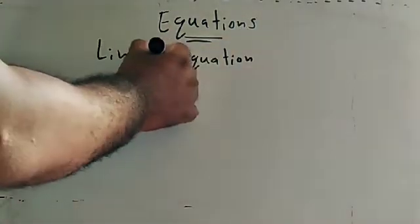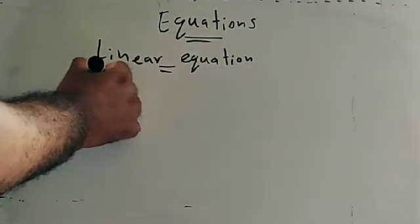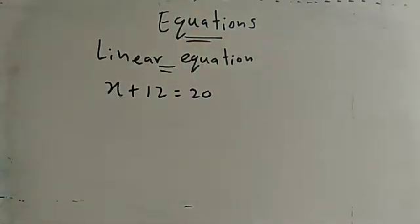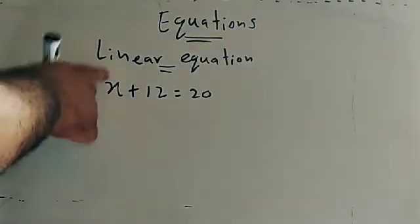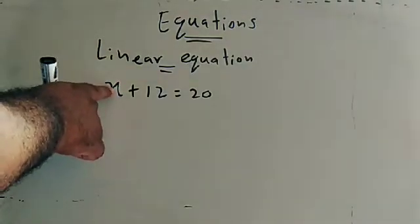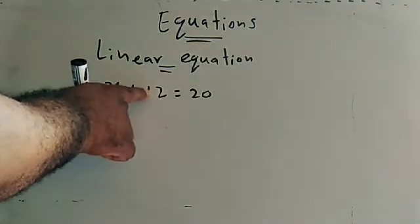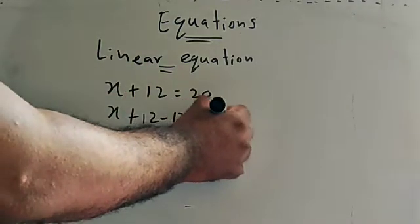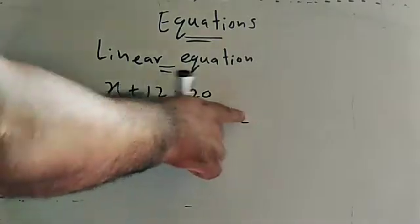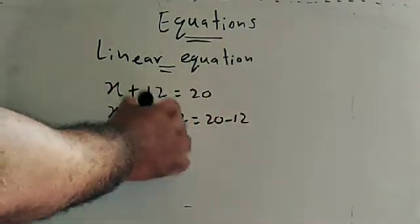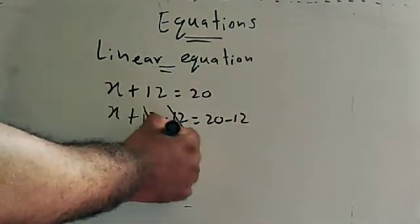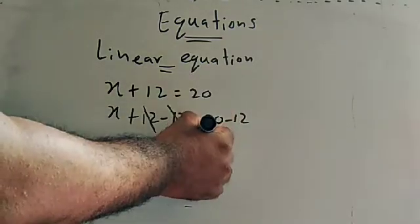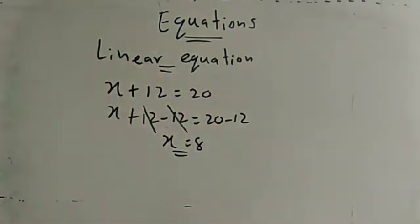In a linear equation, x plus 12 is equal to 20. How can we get the value of x? To cancel plus 12, add minus 12 to both sides. Then plus 12 and minus 12 cancel, leaving x. When 20 minus 12 equals 8, the value of x is 8.